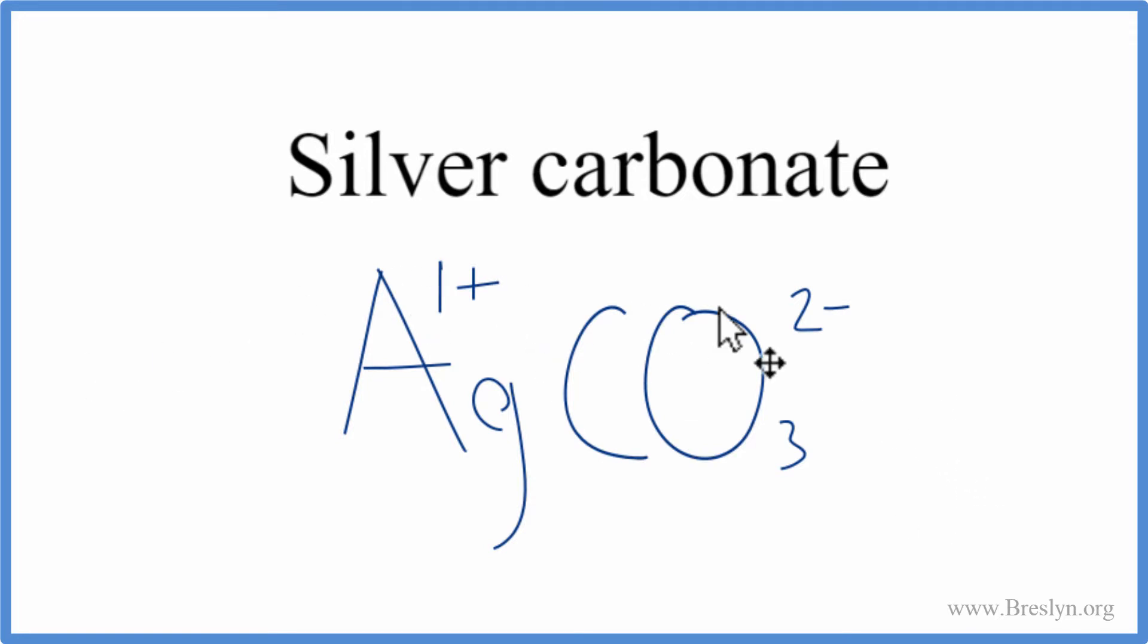We'll use something called the crisscross method. We'll move the 2 from the carbonate down here, and the 1 from the silver out here. We don't need to write the 1 by convention, and we can get rid of the charges. And that's the formula for silver carbonate, Ag2CO3.